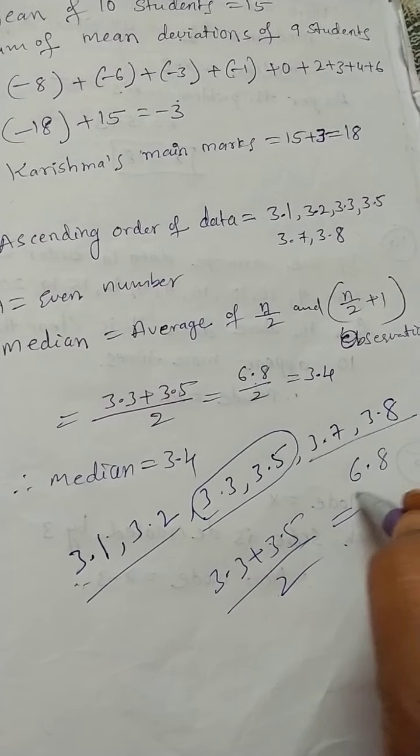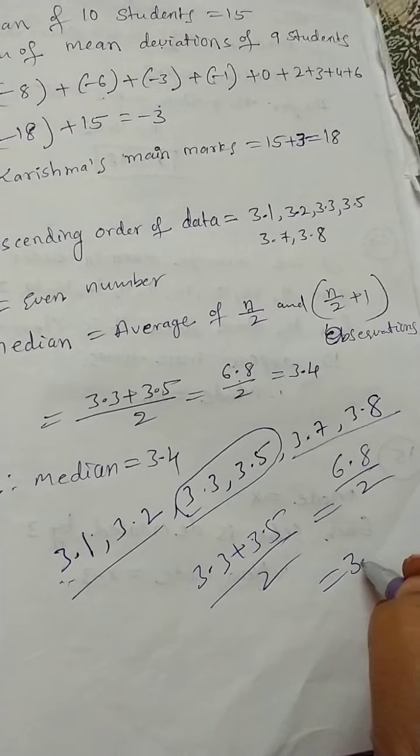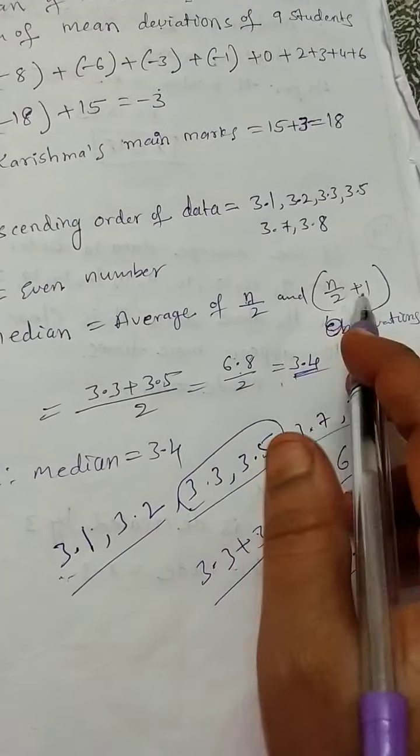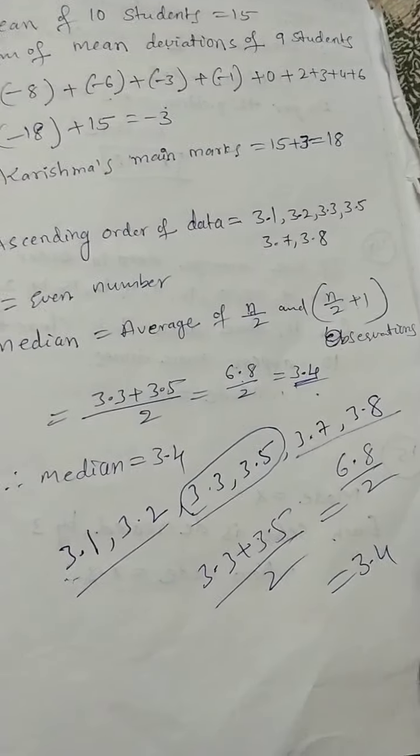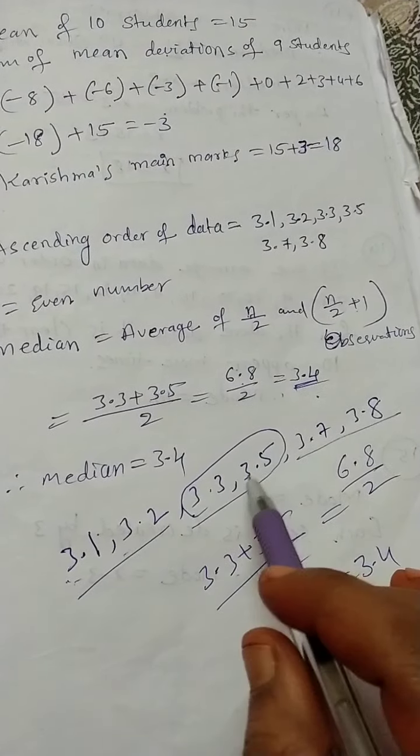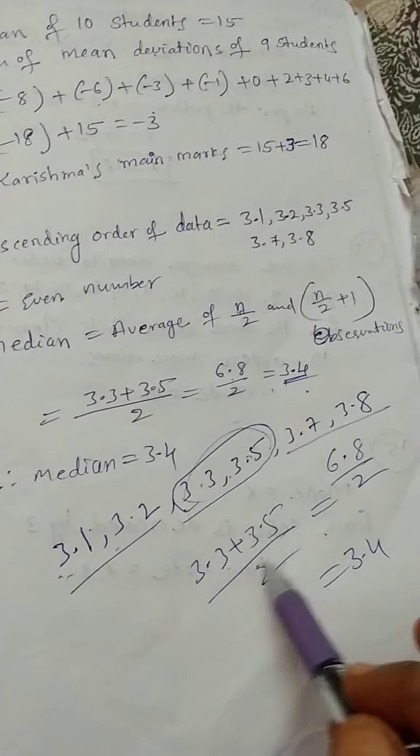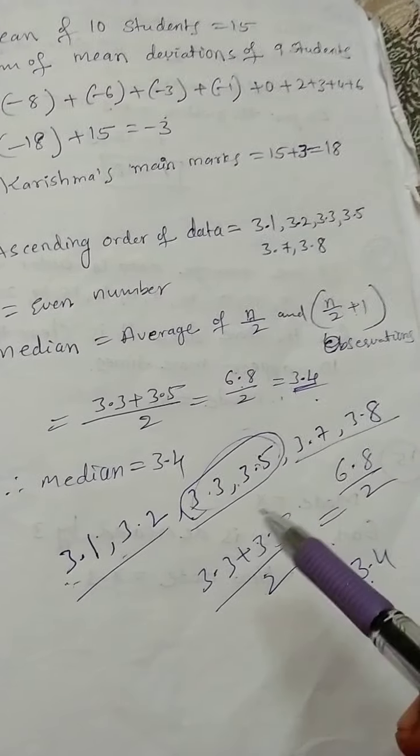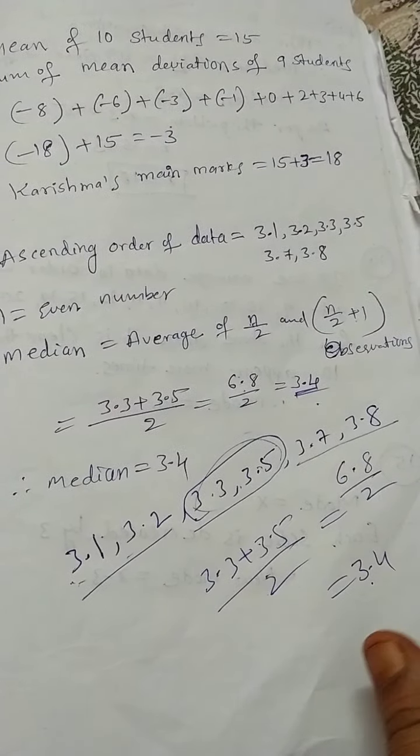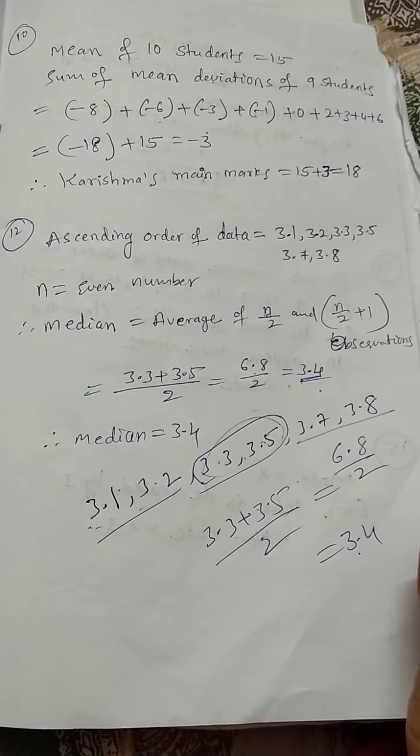Now you can take the average: 6.8 divided by 2, which equals 3.4. By using the formula also you will get 3.4. If you have even data, you take the average of two observations as the median. If you have odd data, then you will get directly one median only.